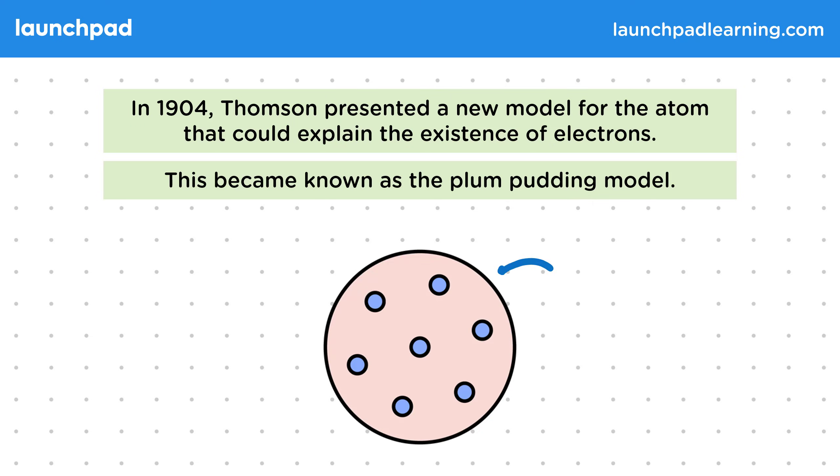It covered all of the known facts about the atom at the time - basically, that it was matter which contained electrons. It was called the plum pudding model simply because it reminded scientists of plum pudding, a common dessert at the time.